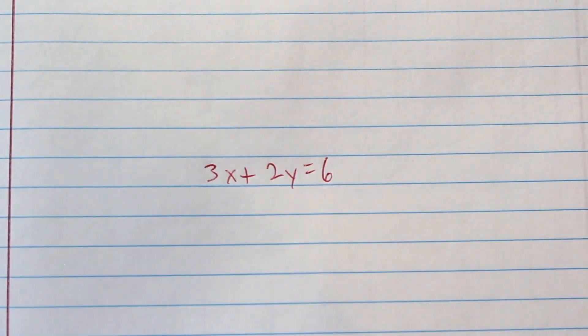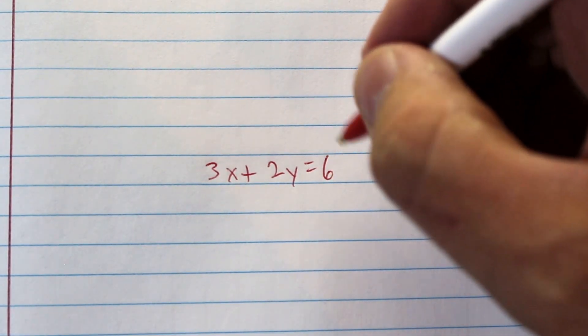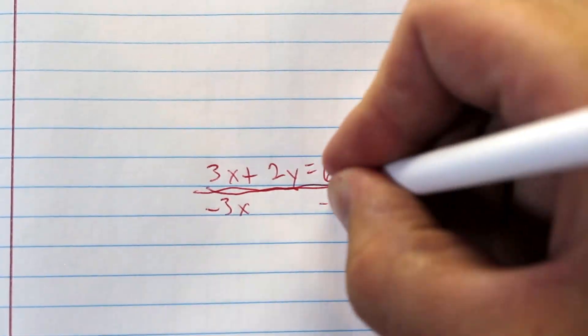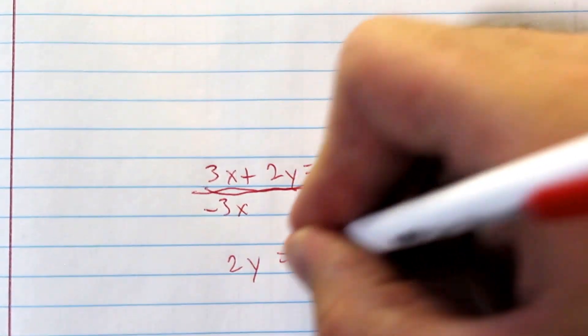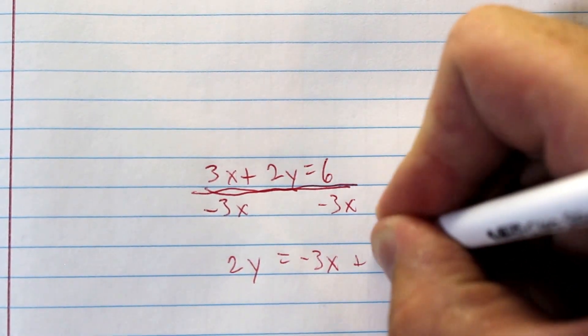So oftentimes an equation will be given in standard form. For example, 3x plus 2y equals 6. This is an equation in standard form. So we need to get this in slope-intercept form. We're going to subtract 3x from both sides. That'll give us 2y equals negative 3x plus 6.